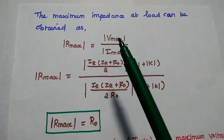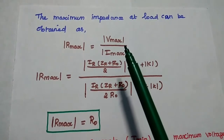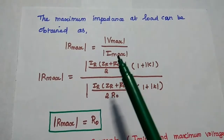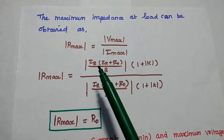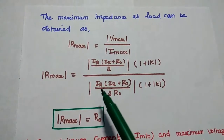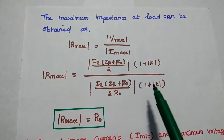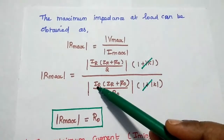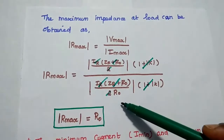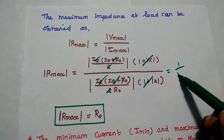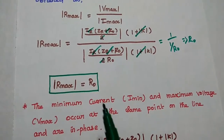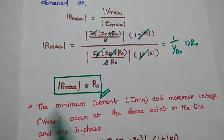The maximum impedance at the load can be obtained as V_max / I_max. Since R = V / I, substituting V_max = I_R × (Z_R + R₀) / 2 × (1 + K) and I_max = I_R × (Z_R + R₀) / (2R₀) × (1 + K), all terms cancel except R₀. Therefore R_max = R₀.